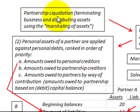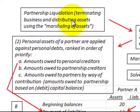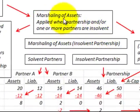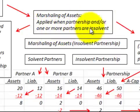We're going to be looking at a partnership liquidation where the partnership is terminating its business and distributing its assets. We're going to be using the marshalling of assets doctrine, which is applied when a partnership and/or one of the partners is insolvent.